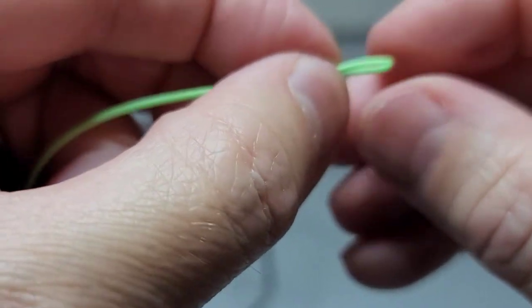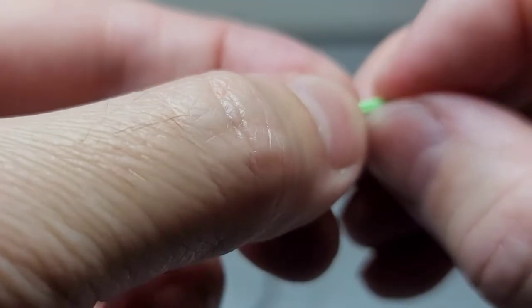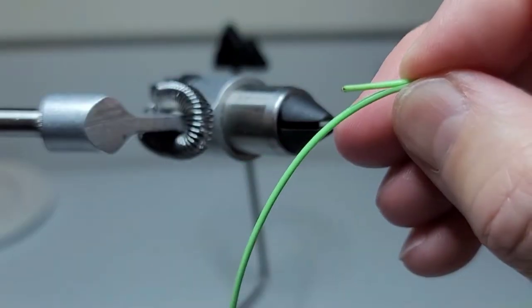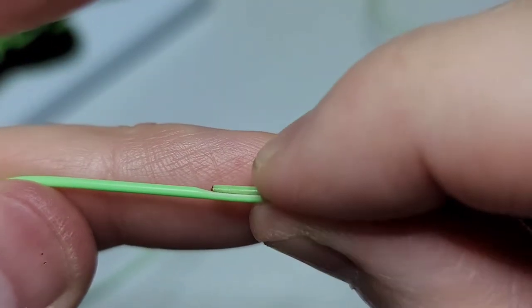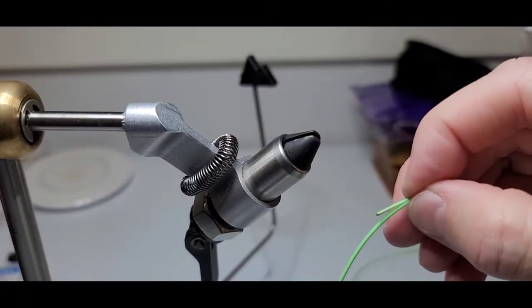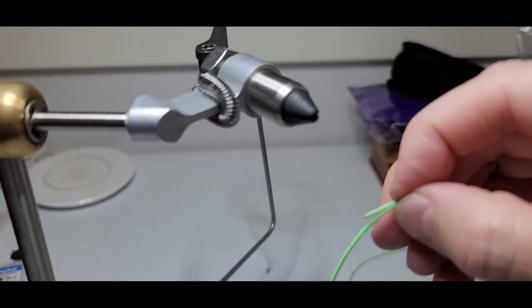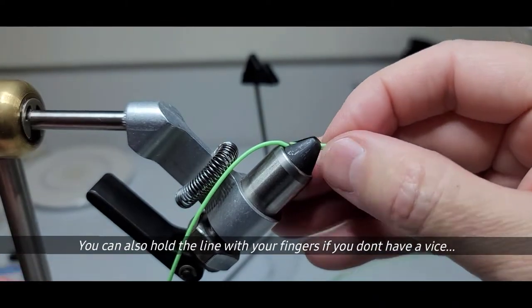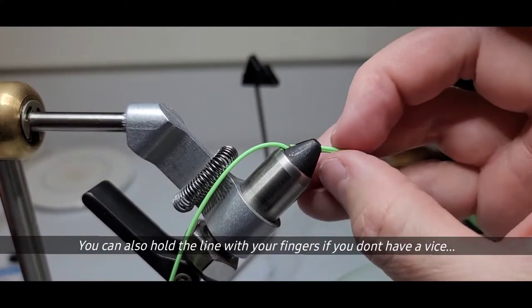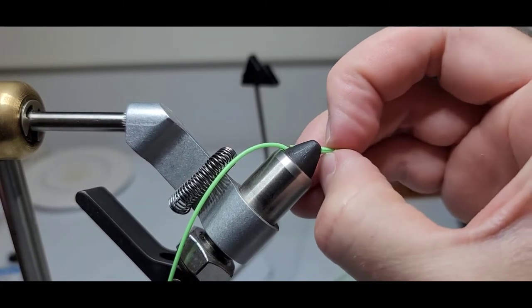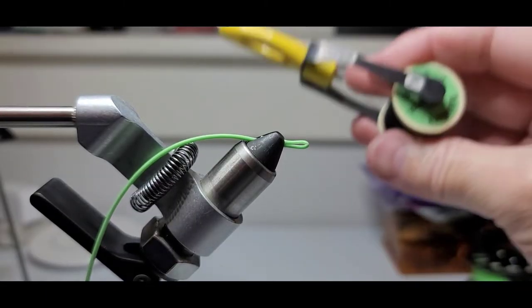Now we're gonna pinch the line flat to flat this way to create as level of a transition as possible. We're gonna open up the jaws on our vise. So I've got it pinched together, and the vise should look something like that. Just however you can pinch those flat sides together.